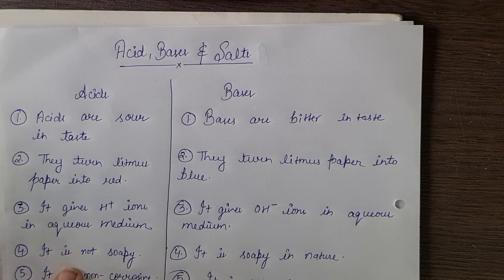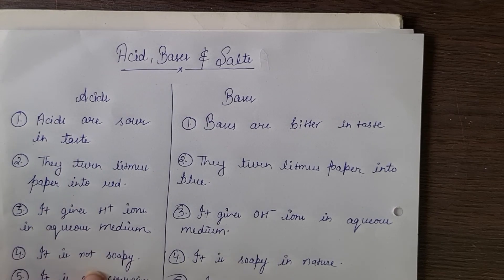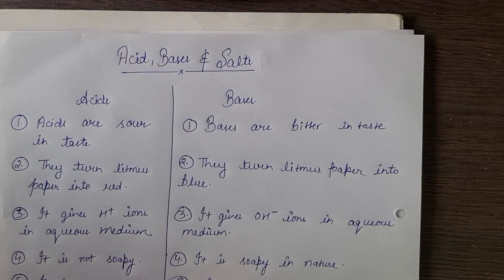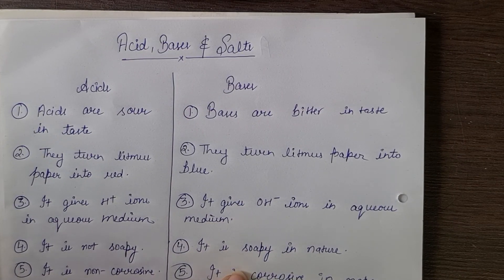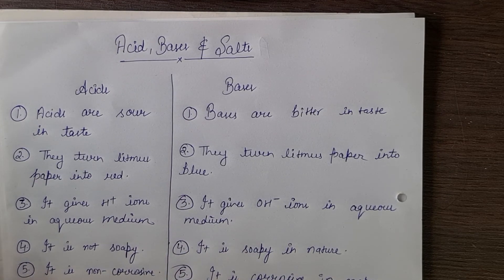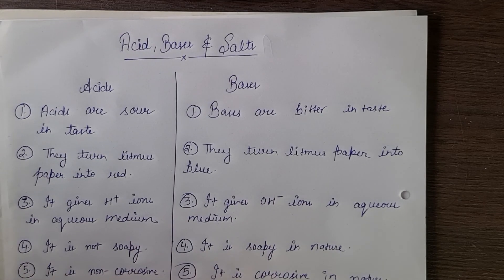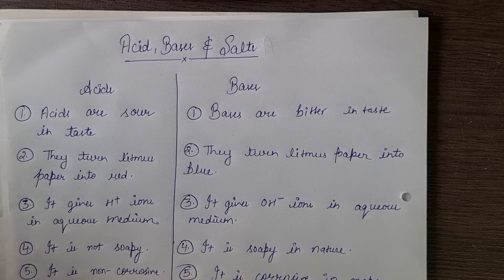The fourth classification is on the basis of soapiness — soapiness means stickiness. Acids are not soapy in nature, but bases are soapy, like soap and baking soda. The fifth classification is on the basis of corrosion. When bases come into contact with certain substances they are corrosive in nature, but acids are non-corrosive in nature. Thank you, please subscribe to my channel.